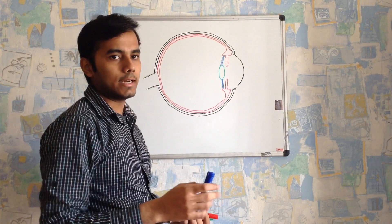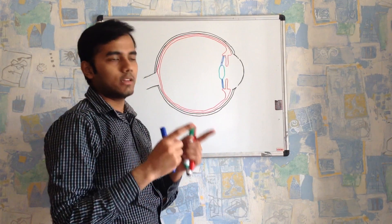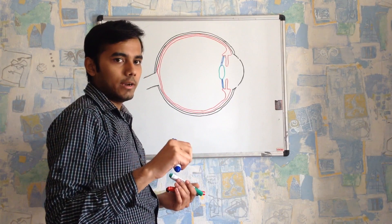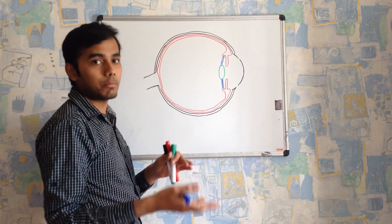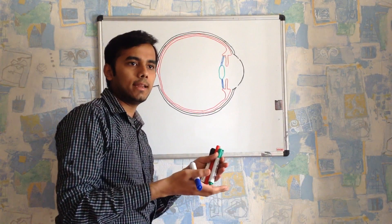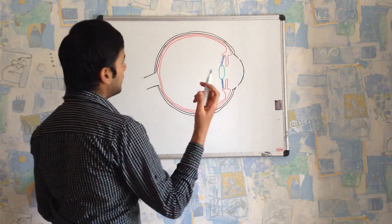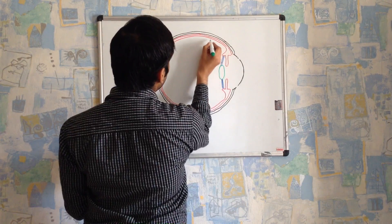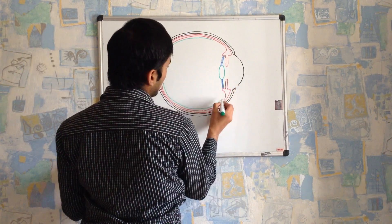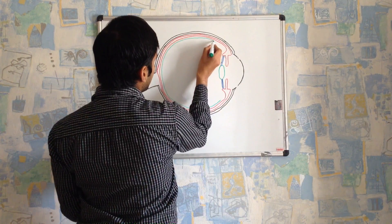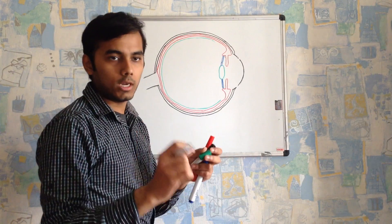The third layer is called the retina. The retina has an important function — it is the main part responsible for color vision. The retina also contains a double layer. The outer layer is called the pigmented layer and the inner layer is called the retinal layer, also called the light sensitive layer. The pigmented layer of the retina does not contain rods and cones; only the retinal or light sensitive layer contains rods and cones.